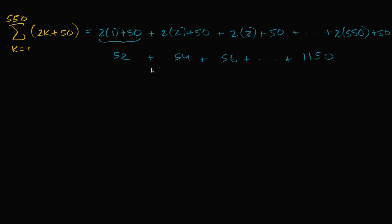So that gives us a good feel for this series. We're going to start at 52 and we're just going to keep adding two for each successive term, all the way until we get to 1150, and we're going to take the sum of all of these. Since each successive term increases by the same amount — we're increasing by two each time — we can recognize this as an arithmetic series.